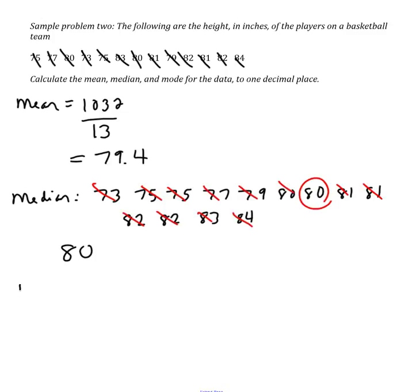And then for mode, again, I can look at the numbers and I can see, okay, there's two 75s, there's two 80s, there's two 81s, and there's two 82s. So I have quite a few numbers that are the mode. And so that's why often the mode is not always the best one to be using in terms of a description of your data.